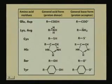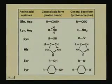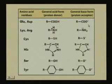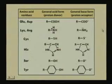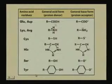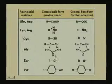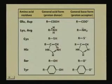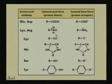For glutamic acid and aspartic acid, the neutral form can act as a proton donor and the anion form as a proton acceptor. For lysine and arginine, they can act as both proton donor and acceptor. Histidine, serine, and tyrosine are also involved in enzymatic mechanisms. The key residue we will definitely consider is histidine, along with serine, aspartic acid, and lysine.